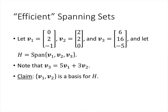A common problem is finding a basis for a given subspace, and one way to do that is through efficient spanning sets. For example, consider three vectors in R³ and let H be their span — the span of any set of vectors is a subspace. Suppose v₃ = 5v₁ + 3v₂. The claim is that we can find a basis for H by simply removing v₃, leaving just {v₁, v₂}.